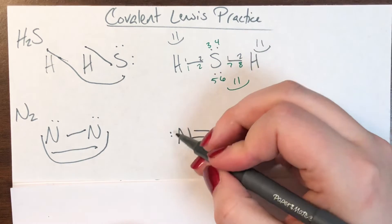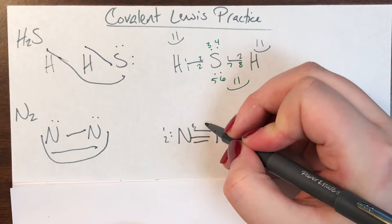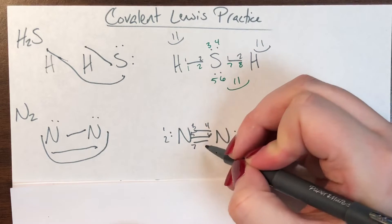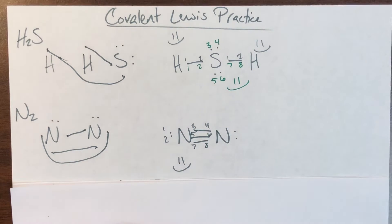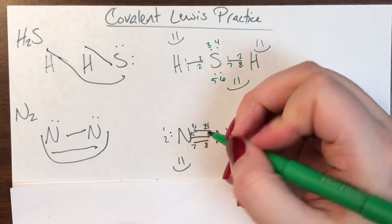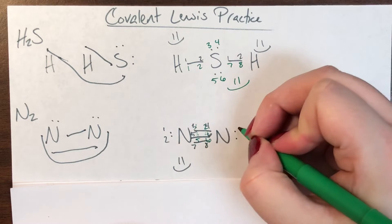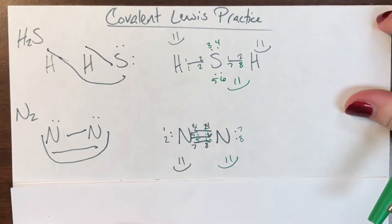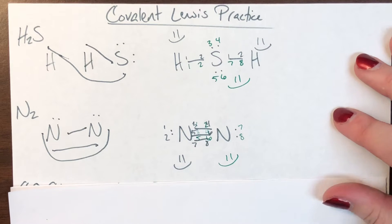The left nitrogen has one, two, three, four, five, six, seven, eight electrons, so it's happy. The right nitrogen also has one, two, three, four, five, six, seven, eight electrons, so it is also happy. That means this is the correct structure for N2.